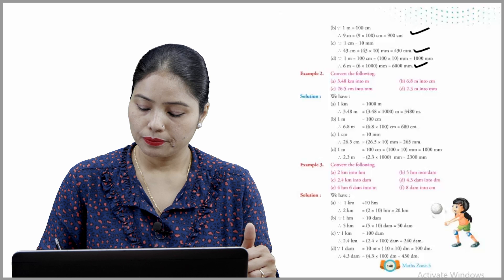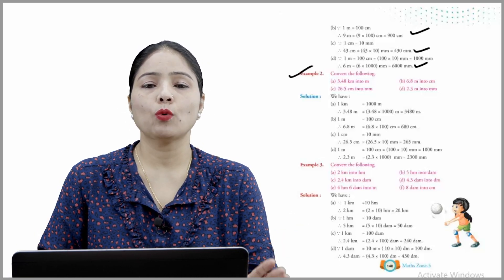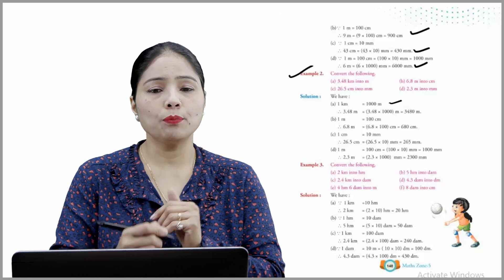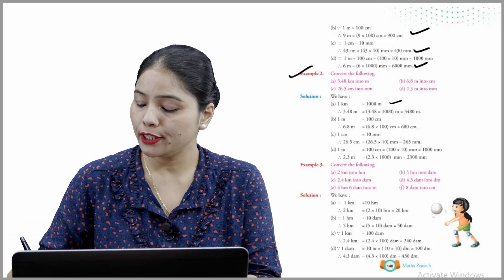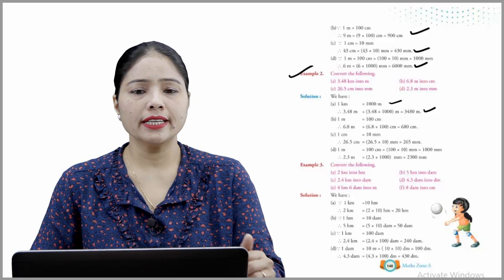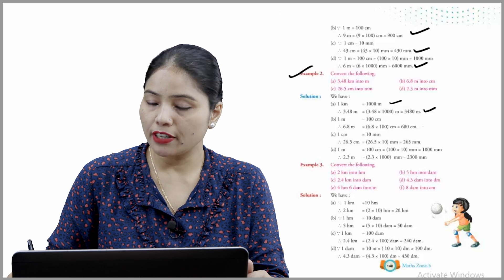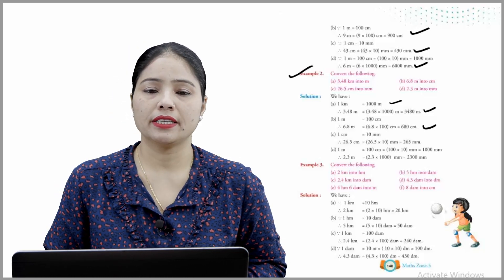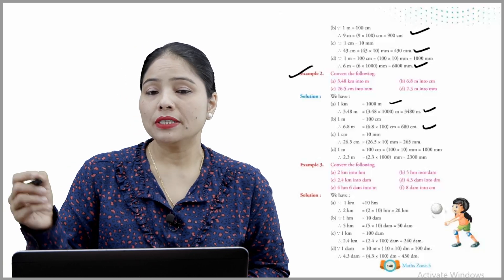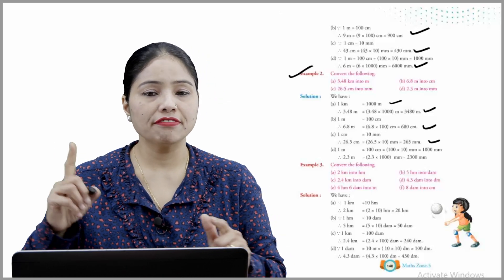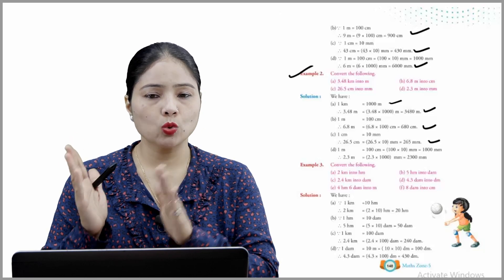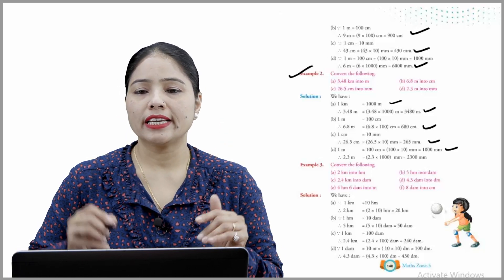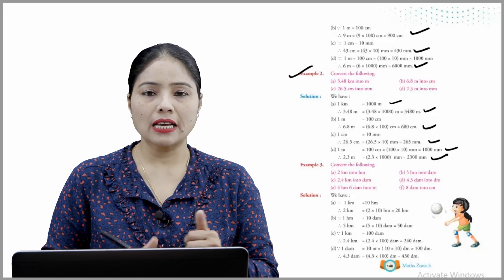Example 2 — convert the following. First: 3.48 kilometers into meters. 1 kilometer = 1000 meters, so 3.48 × 1000 = 3480 meters. Second: 1 meter = 100 cm, so 6.8 × 100 = 680 centimeters. Third: 1 cm = 10 mm, so 26.5 cm × 10 = 265 millimeters. Fourth: 1 meter = 1000 mm, so 2.3 meters × 1000 = 2300 mm.